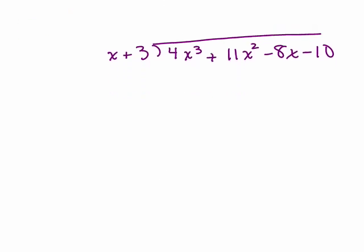So we're ready to go. Remember, you want to concentrate on the first term out in front and the first term inside. X times what will give you 4x³? See if you can figure that out. Put it up on top. If not, you can divide to get your answer. That's going to be 4x².